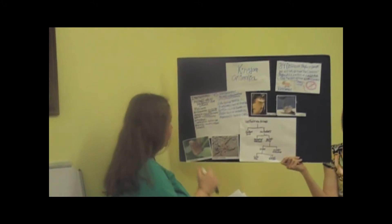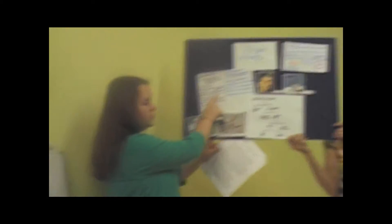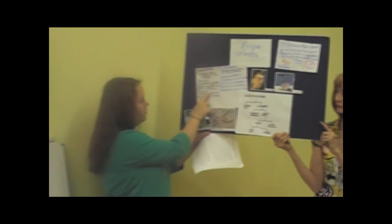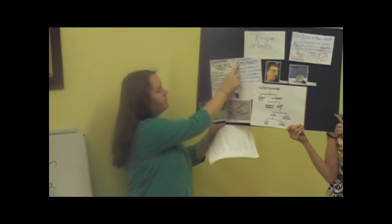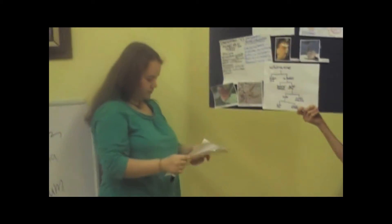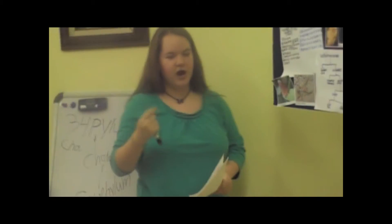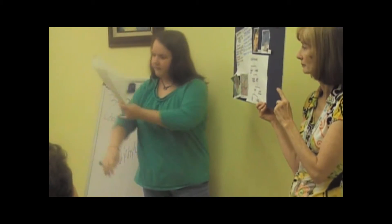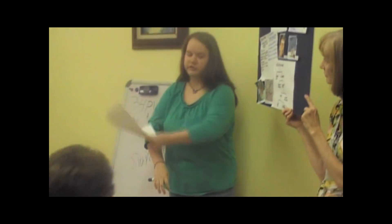To know anything about an animal, we need to first learn if it's an invertebrate, which has no backbone, or a vertebrate, which does have a backbone. Vertebrates are animals that have an internal skeleton, meaning they have skin over their skeleton.